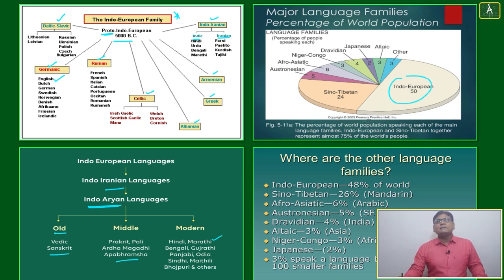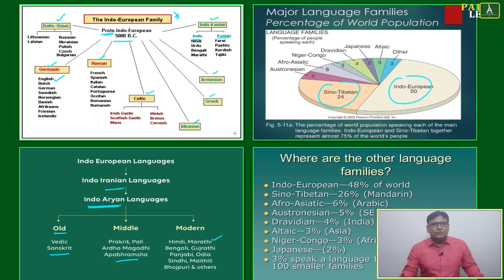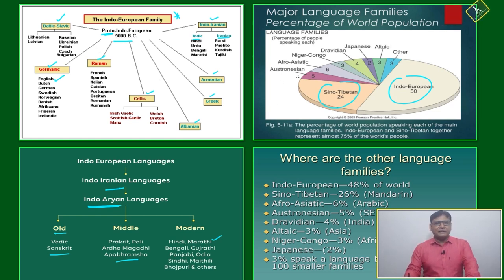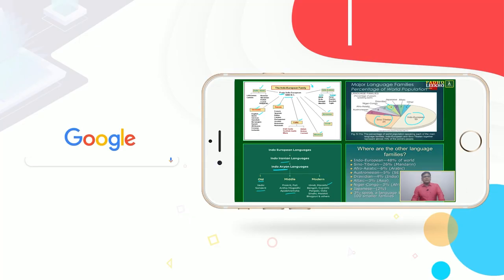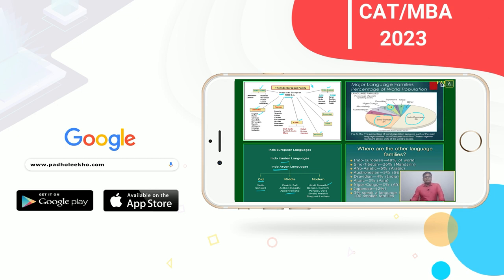Almost 50% of people are using languages from the Indo-European family. Next is Sino-Tibetan, also called Mandarin. After that, Dravidian — the southern India language group — is used by around 4% of people. Then Japanese, Altaic, and others.